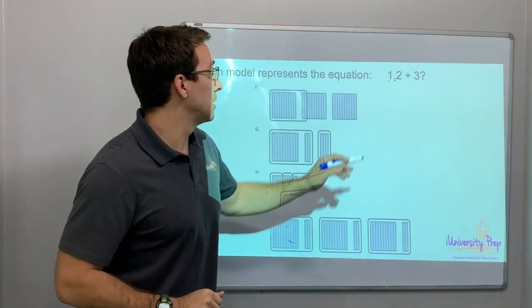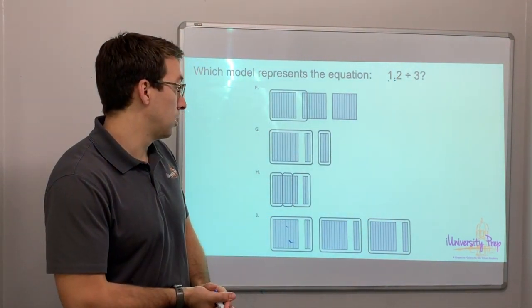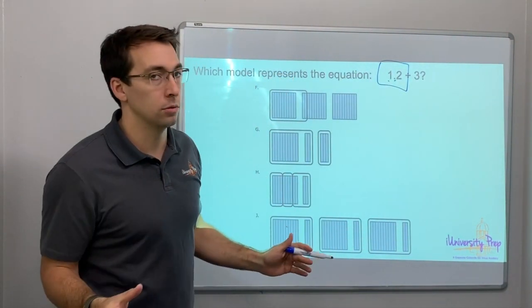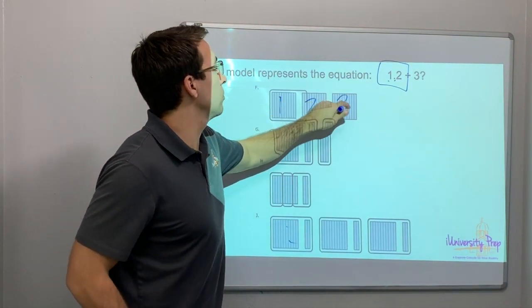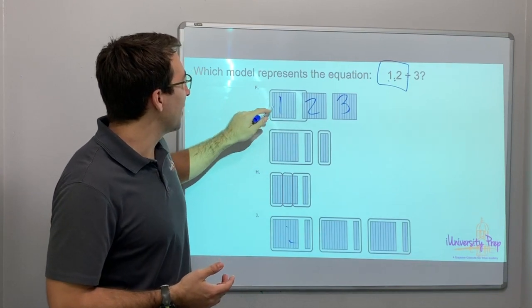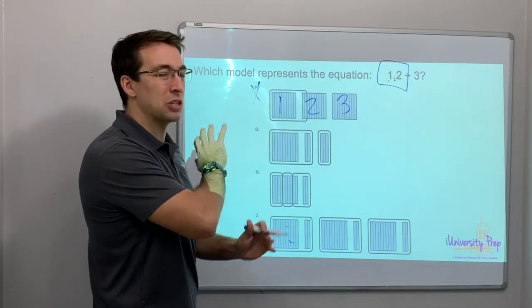So 1.2 divided by three. Let's first off find 1.2. This is 1, 2, 3. But 1.2, that's one and then two out of 10. F is close, but it's wrong.